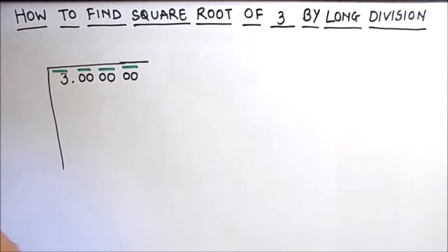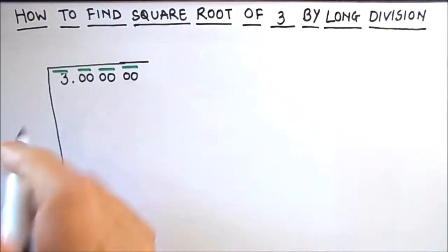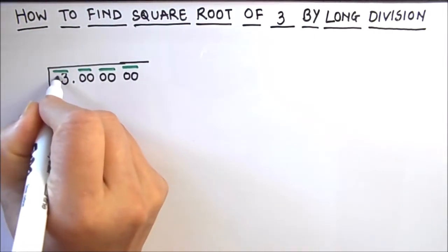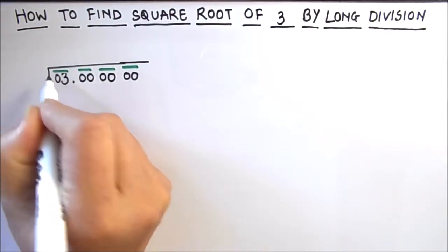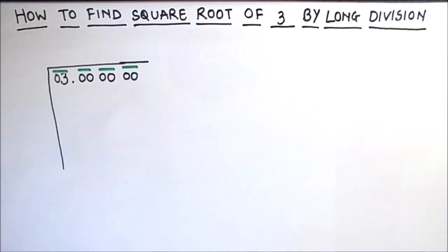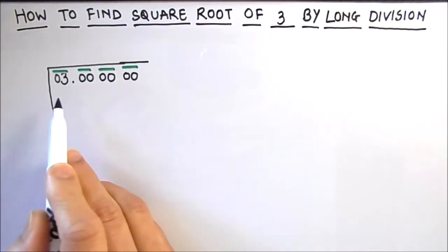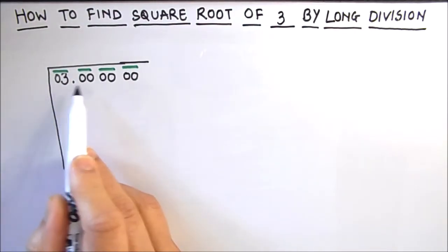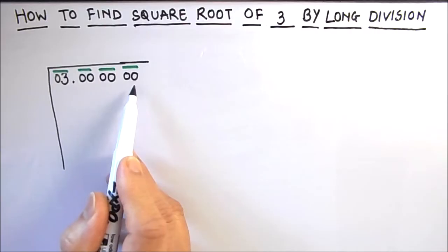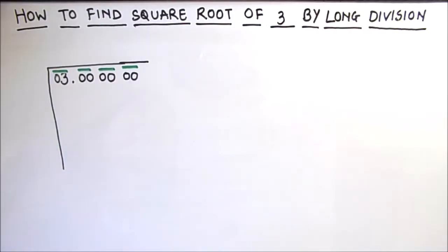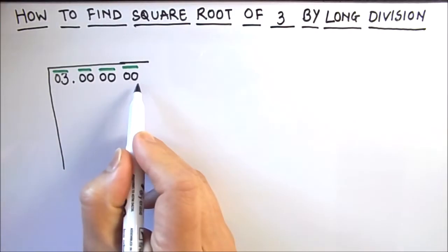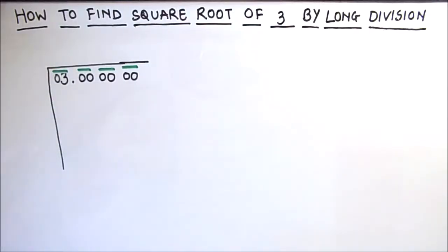We can add a 0 in front of the number — it is not going to change the value. So we have 4 groups now: 1, 2, 3, 4. The first step is to make pairs of numbers starting with the units digit.